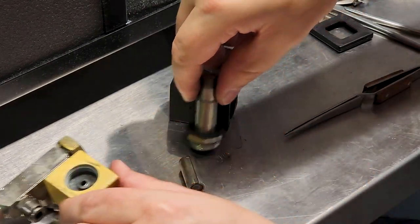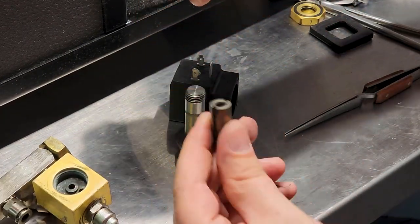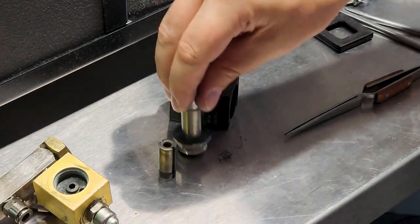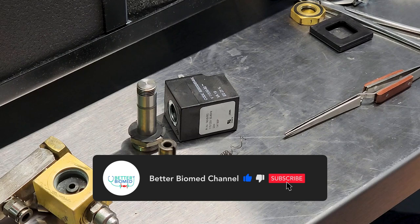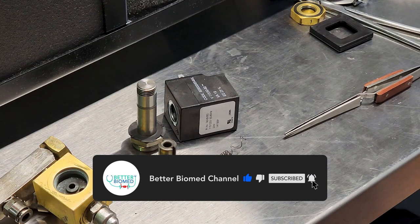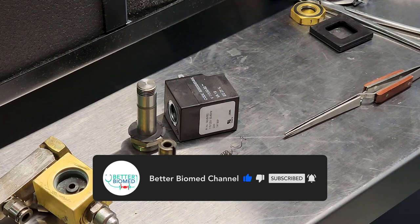But it just goes to show you guys, we can get parts for these, we can rebuild them, and they are pretty common parts. So that's the anatomy of failure of a solenoid valve. Thanks for watching, guys.